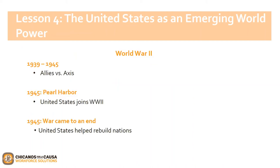The Axis' efforts to conquer and invade other nations were met by the Allies — England, France, and Russia — who tried to intervene. Even though the United States did not join immediately and were still dealing with the Great Depression, they strengthened their military infrastructure just in case. The United States finally joined the war in 1941 when the Japanese bombed the U.S. naval base at Pearl Harbor in Hawaii.